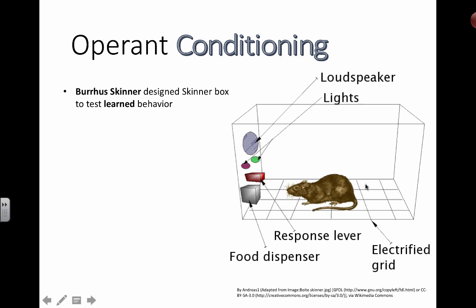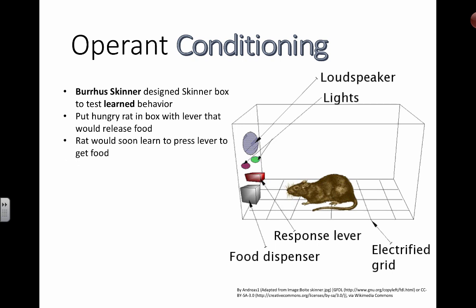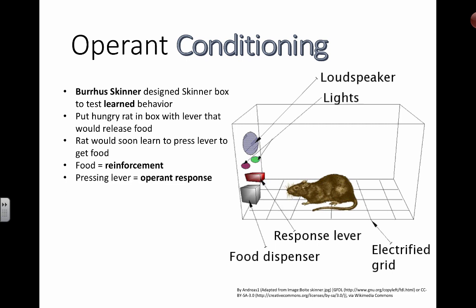You can kind of predict what's going to happen when you have a little mouse inside a box. We put a hungry rat inside a box with a lever that releases food. The rat would eventually, through trial and error and messing around with the only things in the room, press the lever and be able to get some food. The food is the reinforcement — the rat likes that. So pressing the lever is considered the operant response, a kind of learned behavior, and the rat will continue to do this at a higher frequency as long as food keeps coming out.